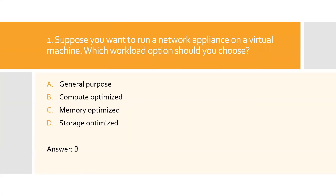Question one: Suppose you want to run a network appliance on a virtual machine. Which workload option should you choose? A) General purpose, B) Compute optimized, C) Memory optimized, D) Storage optimized. Option B is the right answer. Compute optimized virtual machines are designed to have a high CPU-to-memory ratio, suitable for medium traffic web servers, network appliances, batch processes, and application servers.